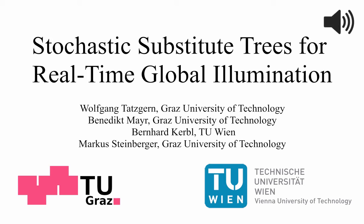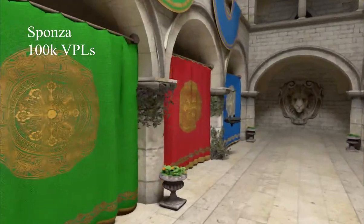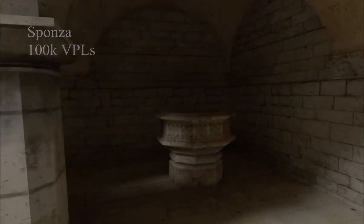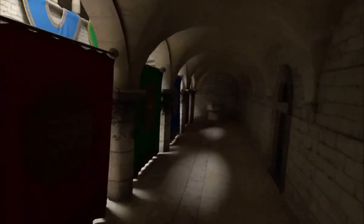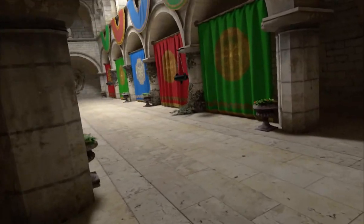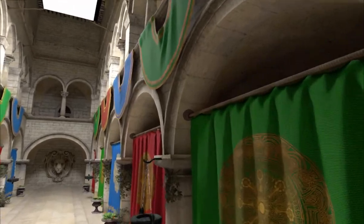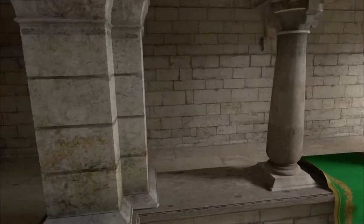We present stochastic substitute trees for real-time global illumination. Motivated by light cuts and stochastic light cuts, we propose an efficient way to build a light tree each frame. Additionally, we introduce substitute distributions, which describe clusters of VPLs for more efficient sampling, while maintaining or even improving the quality. We are also able to capture global illumination better than path tracing with two or more bounces.